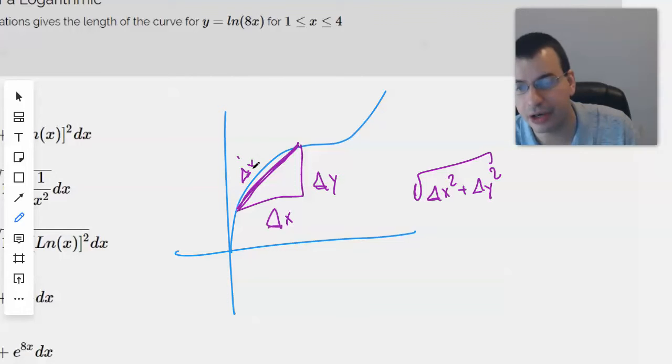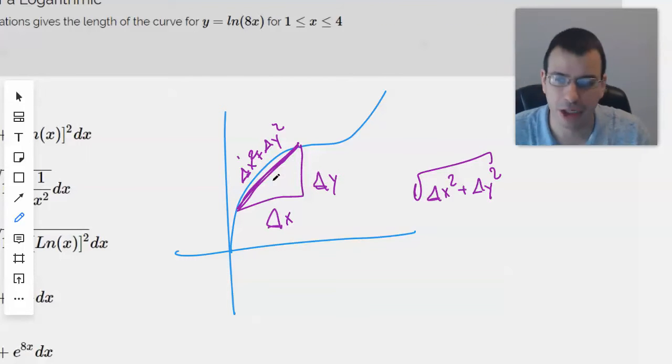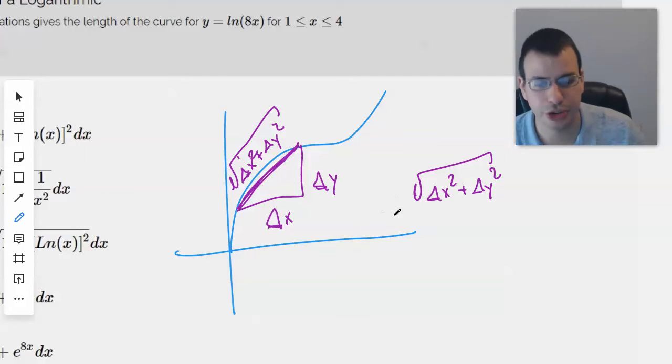If you take dy and dx to be pretty small, delta x, delta y, to be pretty small, you get pretty close. And once you get infinitely small, you get infinitely close, which is infinitely accurate, which is pretty close to correct. And the idea is we're going to integrate that from the start to the end.